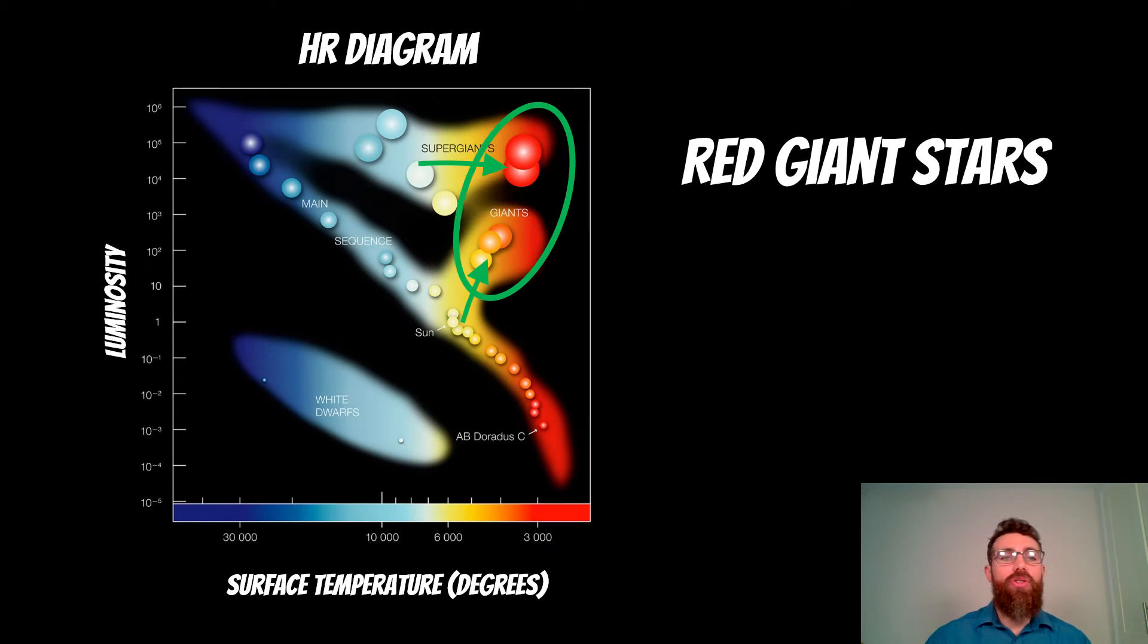So if we go to the HR diagram, on the upper right we have this group where we have the red giant stars. So this is where stars will evolve once they've come off the main sequence and depending on their mass they take a slightly different route into that.